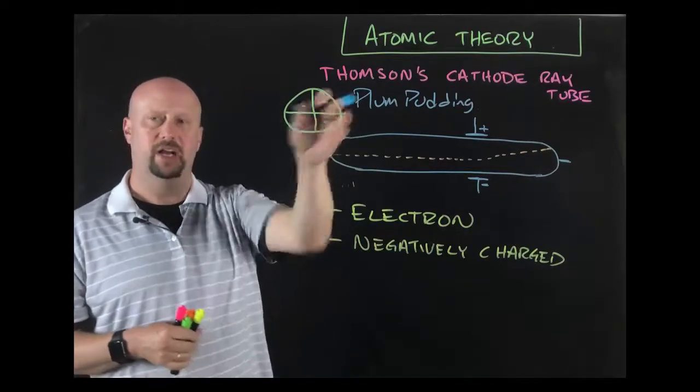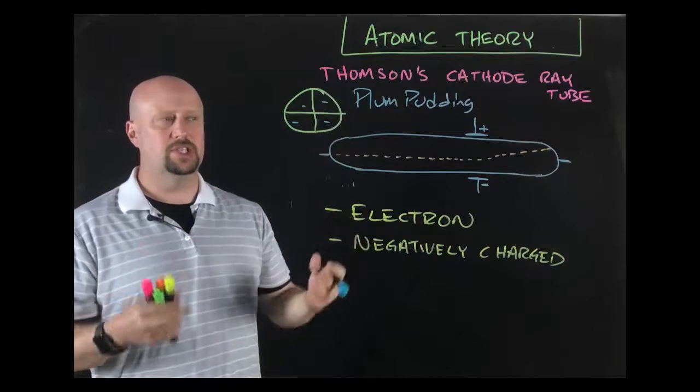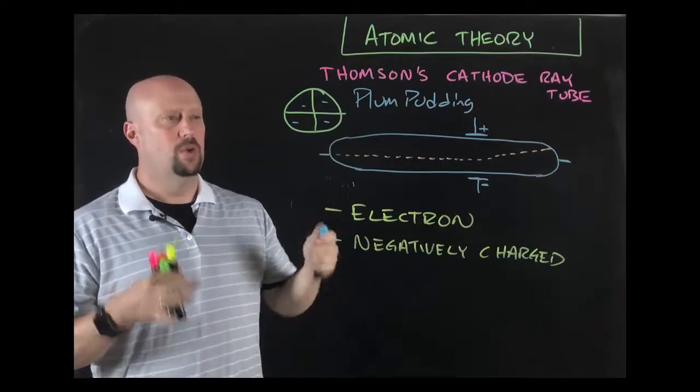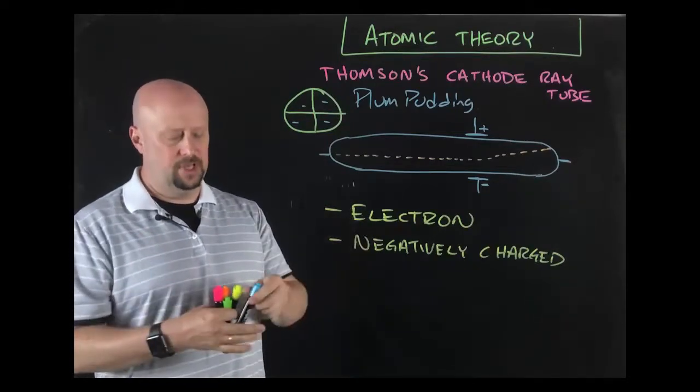That doesn't really make sense to us nowadays, certainly as Americans, because we don't eat a lot of plum pudding. I like to think of it as the chocolate chip cookie model, where there's a cookie base of positive charge, and then there are chocolate chips - electrons - embedded within that. So there's a solid mass of positive charge with little chips of negatively charged electrons. That's Thompson's cathode ray tube experiment - really fundamental, massively important.